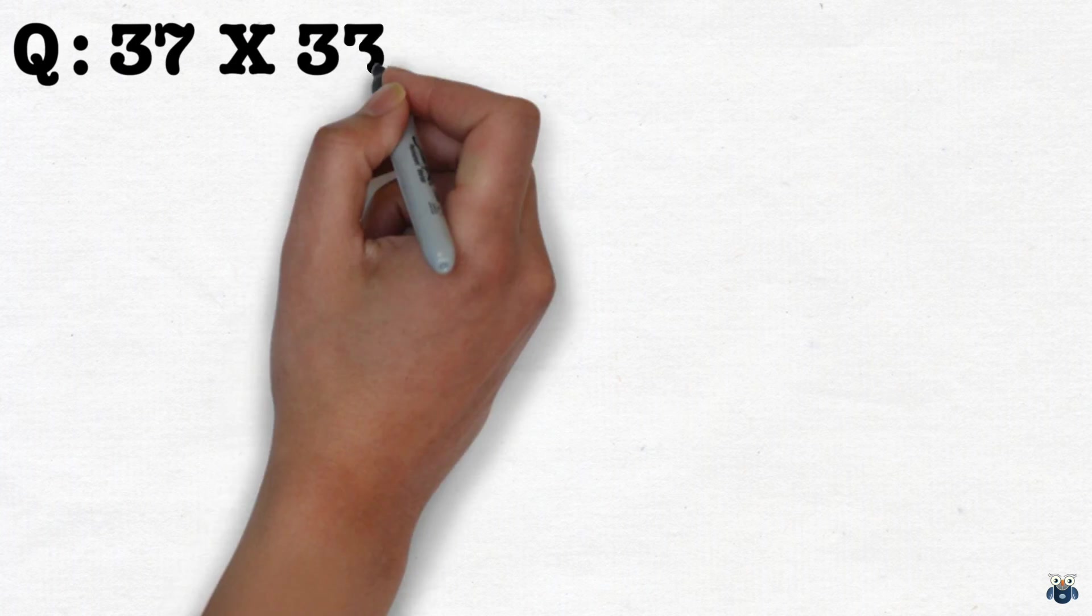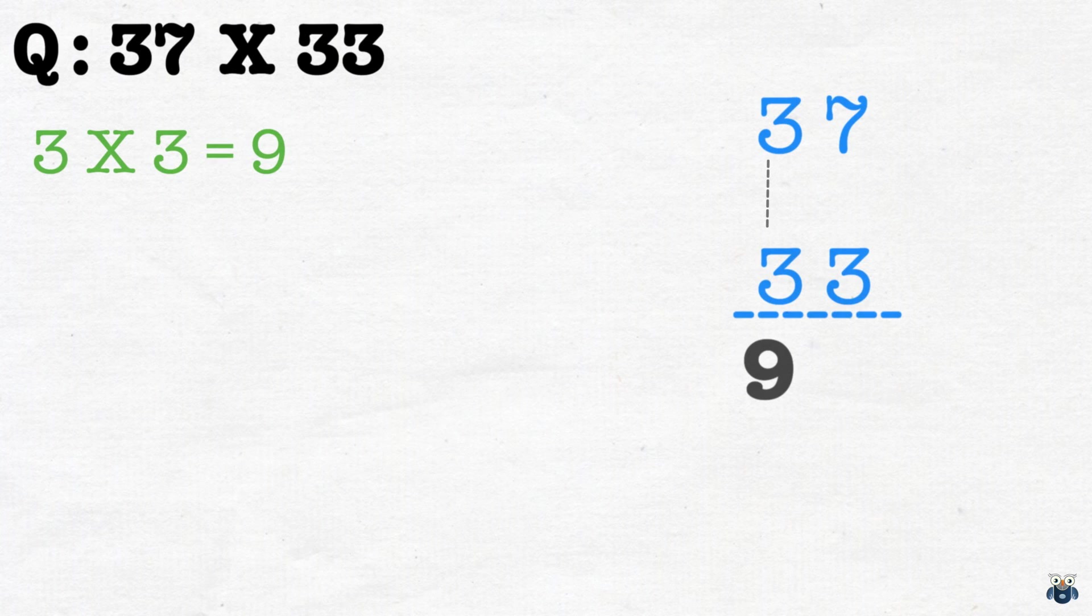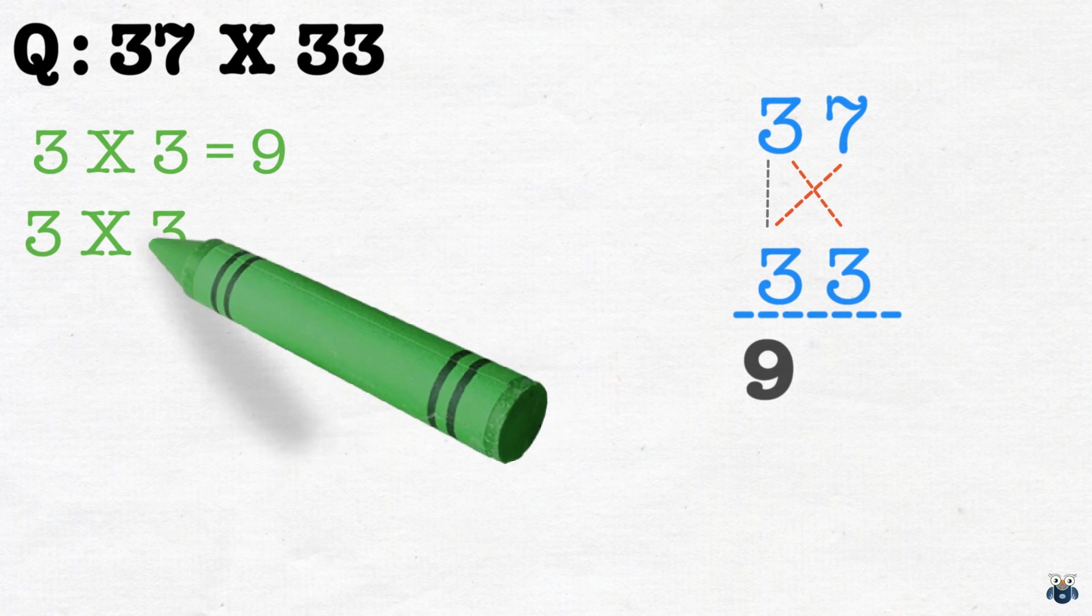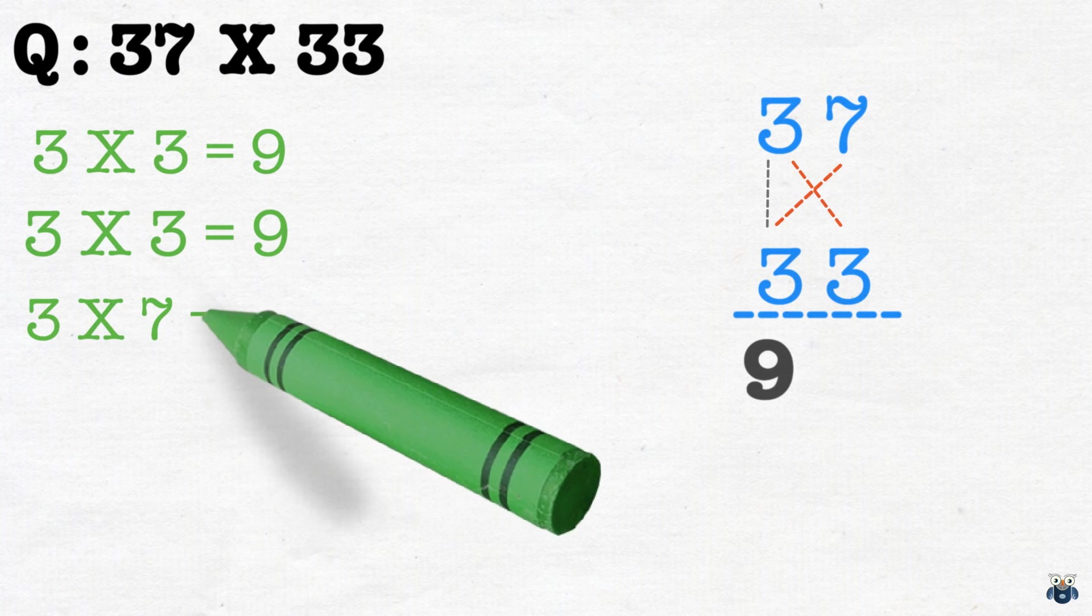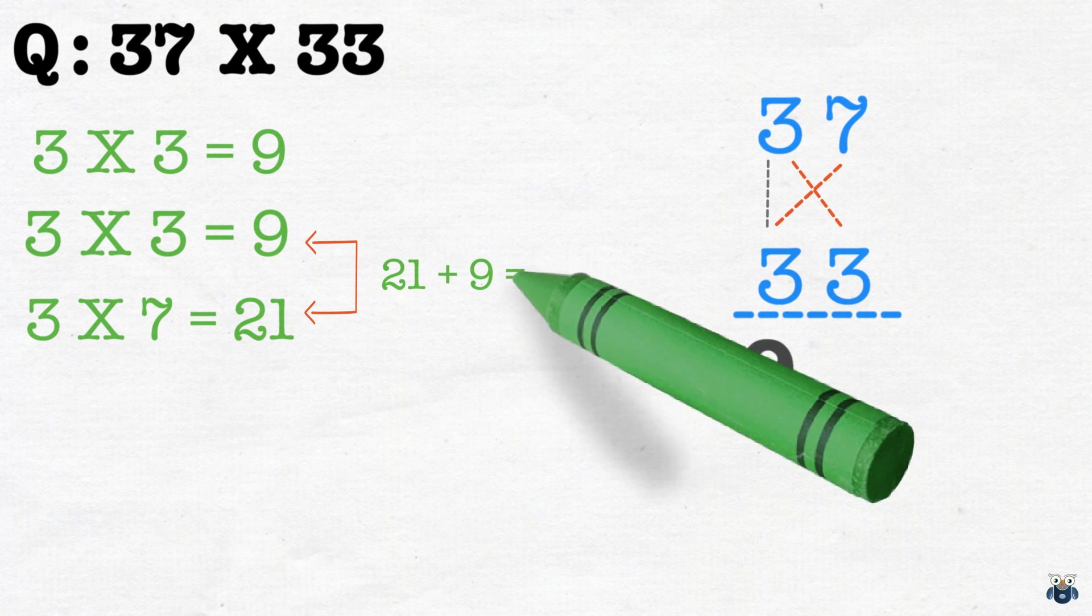Now let's raise the bar and look at a more complex example. What is 37 times 33? Starting from the left, we first find the product of 3 times 3 which is 9. We then cross multiply. 3 times 3 is 9 and 3 times 7 is 21. Adding both results, we get 21 plus 9 which is 30.